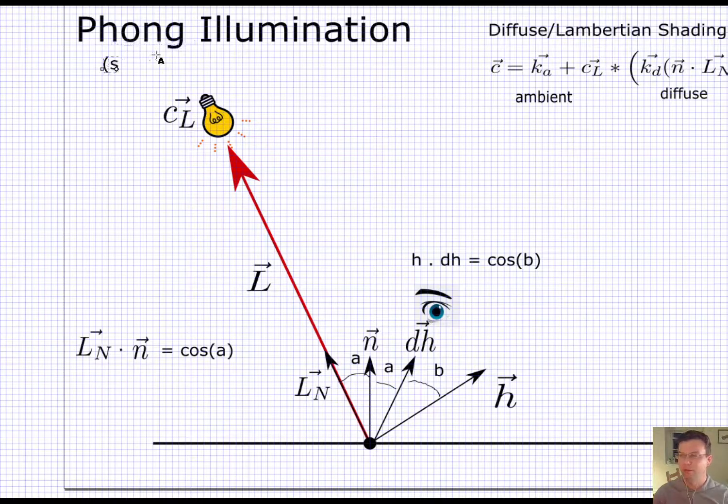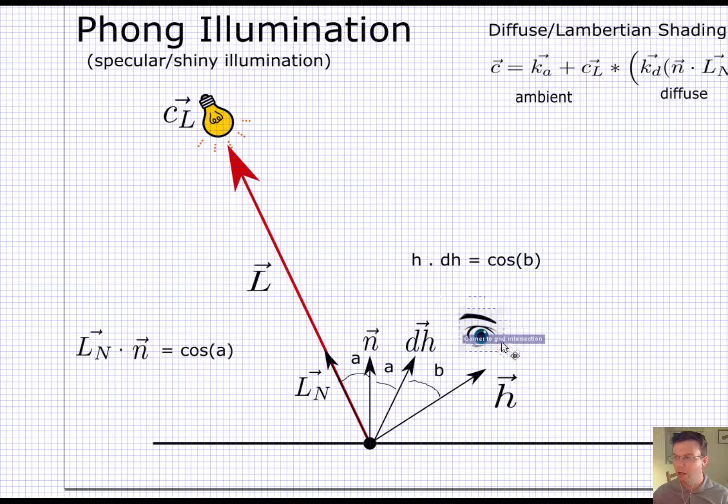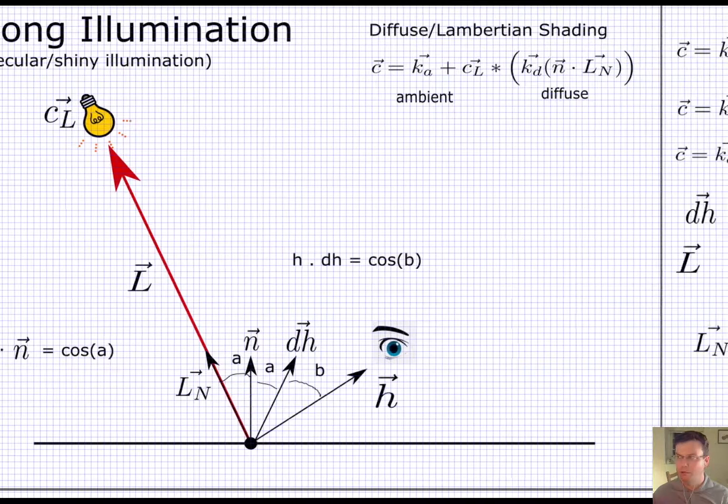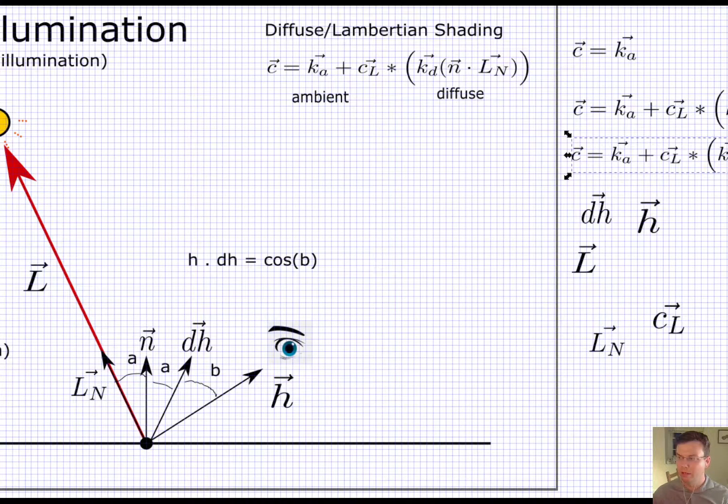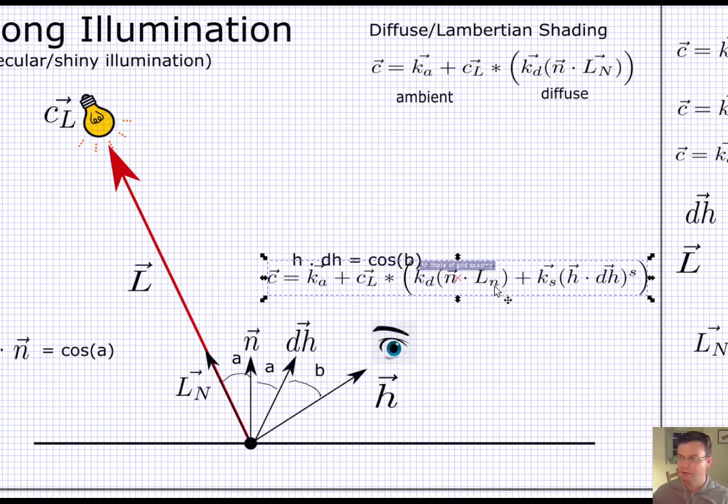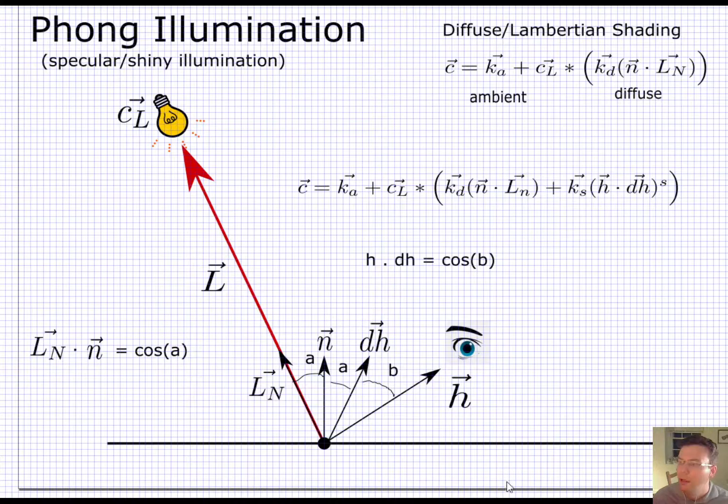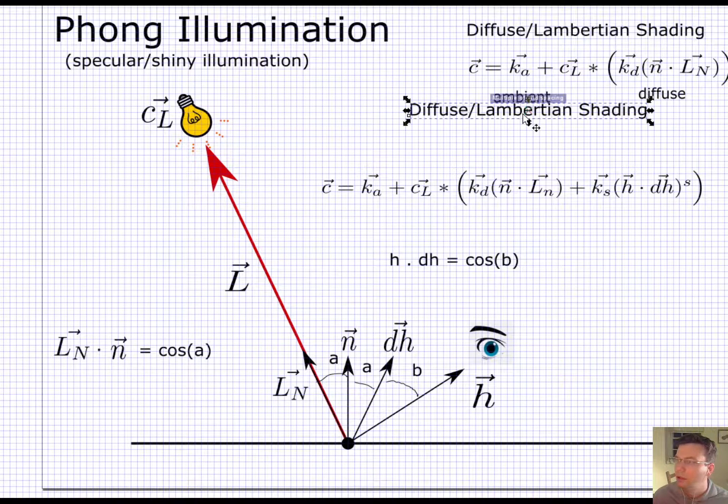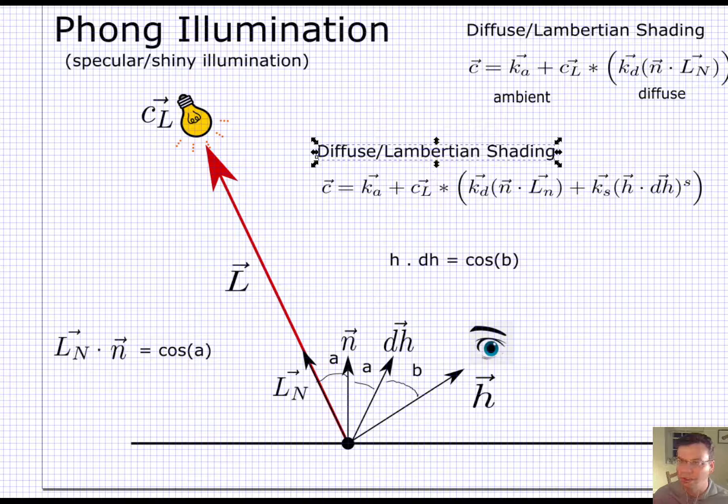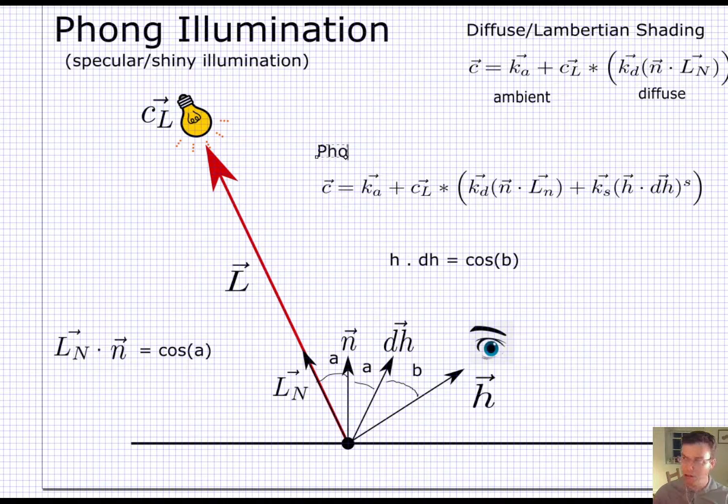So we'll say Phong illumination, but also specular and shiny illumination. So if I coincide with the perfect angle out, then I get all the specular light. Otherwise, I fall off as a cosine. So if I want to incorporate that into a final equation, then it'll look like this. So here is Phong illumination - Phong shading is something a bit different.